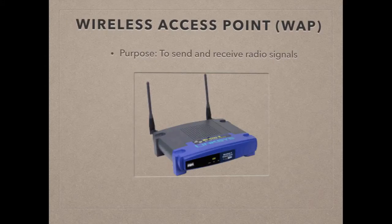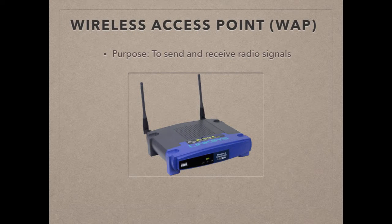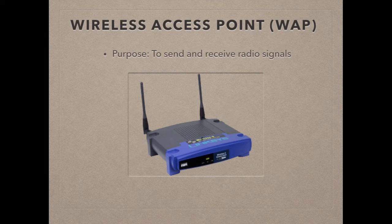A wireless access point, also called WAP or AP, consists of special devices on a wireless network which send and receive radio signals. These devices are mostly found in the home and small businesses. WAP devices have an antenna and a network adapter.